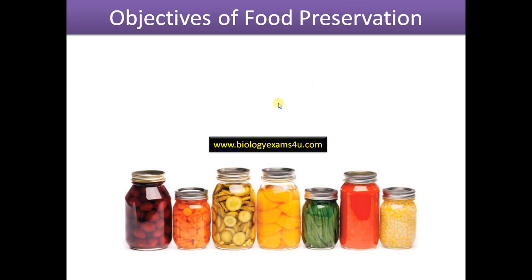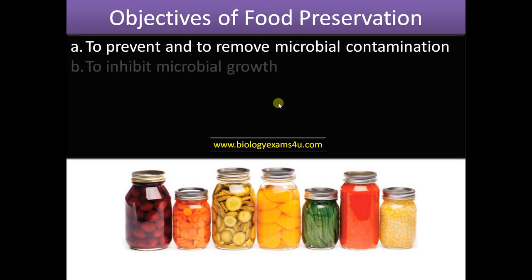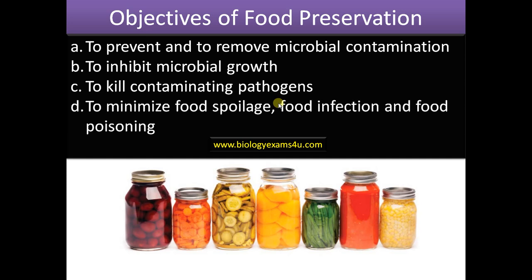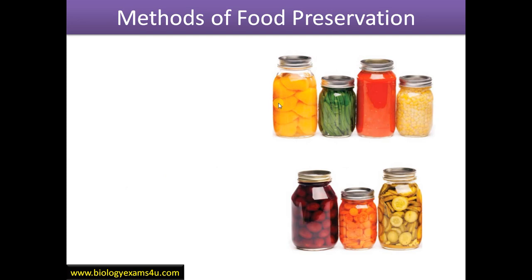The major objectives of food preservation are: to prevent and inhibit the growth of microorganisms, to kill contaminating pathogens that cause food poisoning, and to minimize food spoilage, food infection, and food poisoning. These are the major objectives of food preservation.